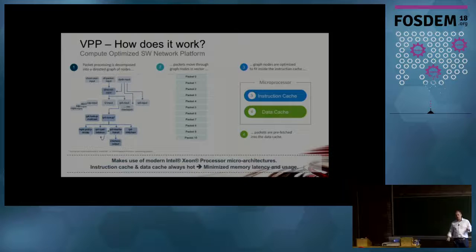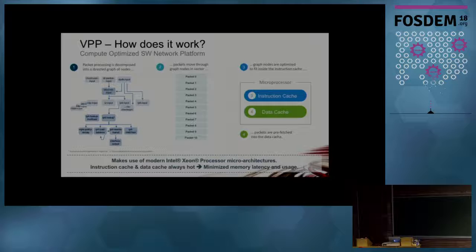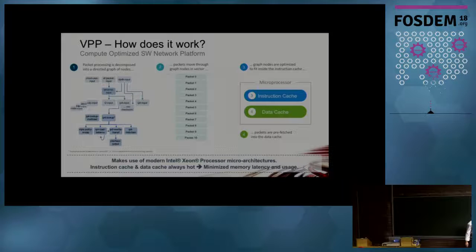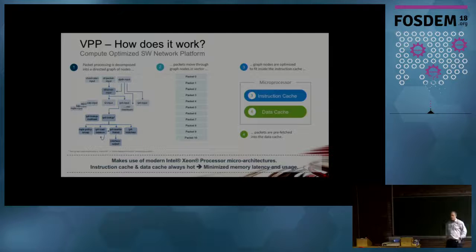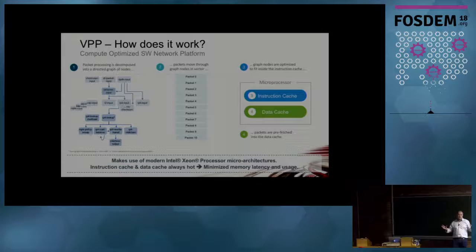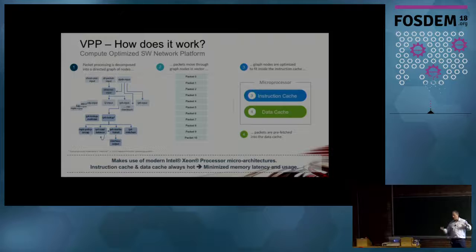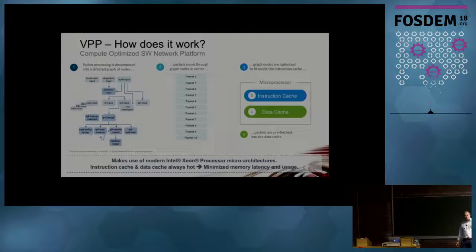VPP works with vectors of packets in order to make the best use of instruction cache as well as data cache. When we process a packet, we go through several nodes — for instance, reading from DPDK, processing at Ethernet level, then IPv4 or IPv6 lookup, then forwarding. The usual code for data paths is actually pretty long — you may have to do ACLs, NAT, and many other things. So what we try to do is make sure that when we execute an instruction to process a packet, that instruction is actually in the CPU cache.